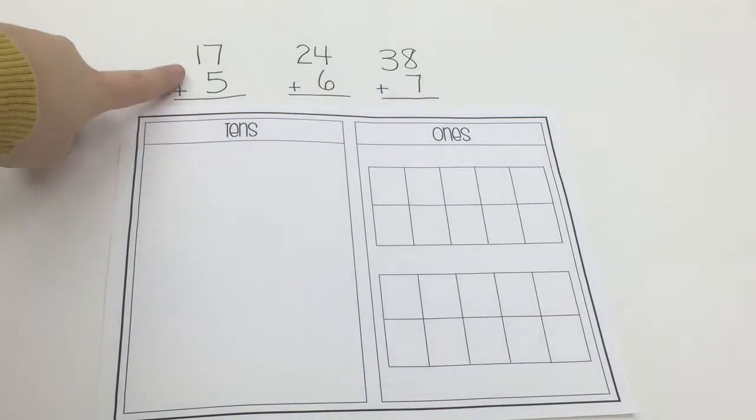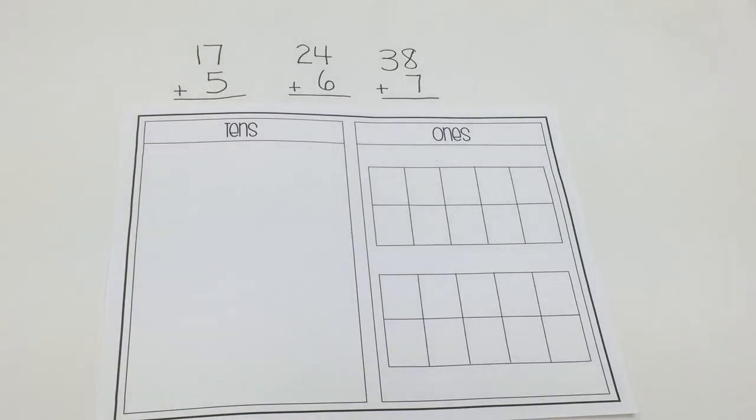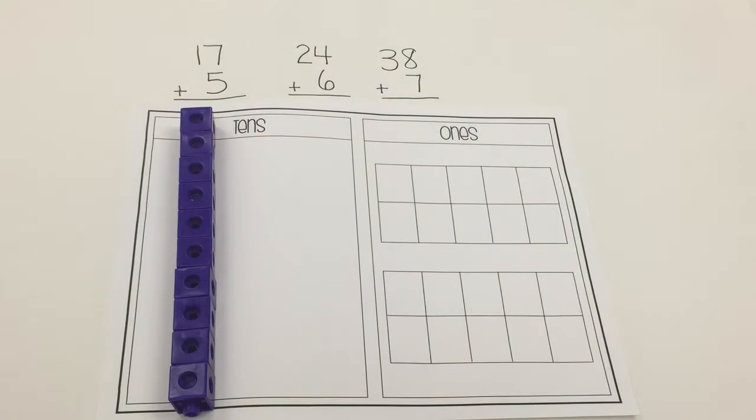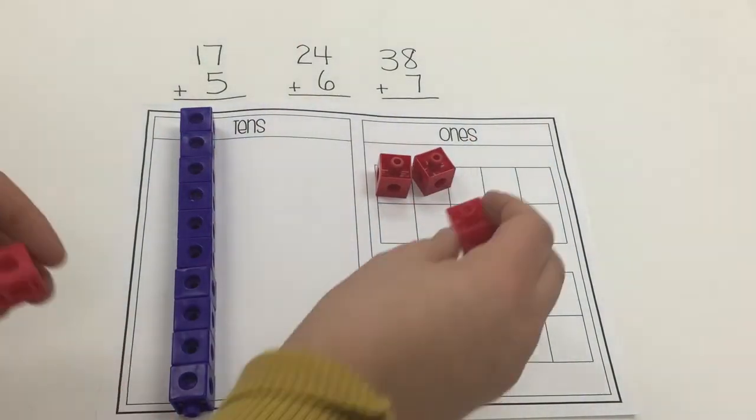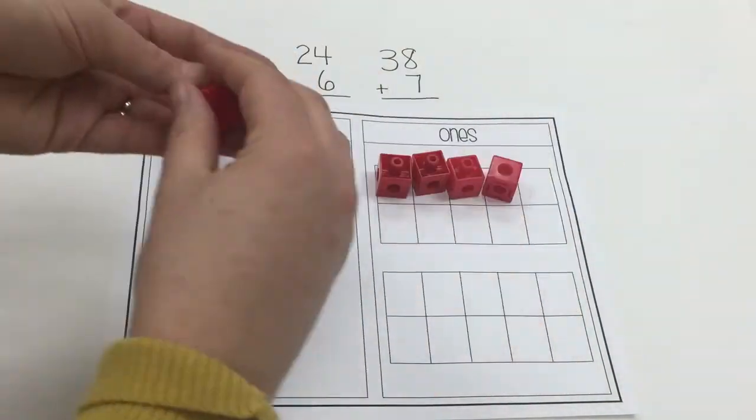So let's get started. If I'm going to teach my kids 17 plus 5, I'm going to give them manipulatives. And I'm going to tell them they are going to build 17 first. So they'll take their Unifix cubes and they will build it on the place value mat. 17.